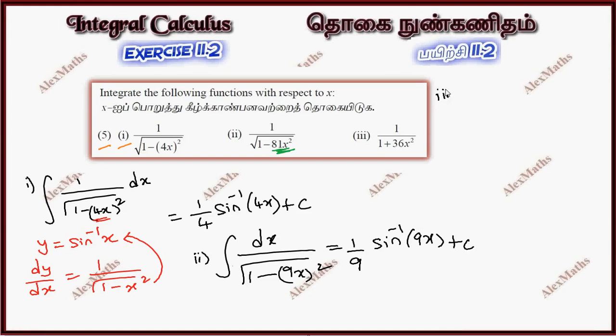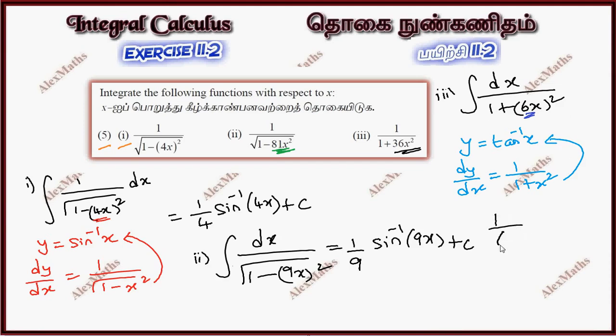Third subdivision. This is the integration of dx by 1 plus 36x square, which is 6x whole square. The answer is 1 by 6 tan inverse 6x plus C.